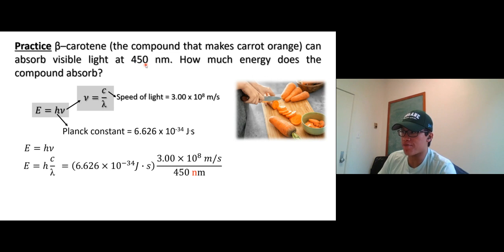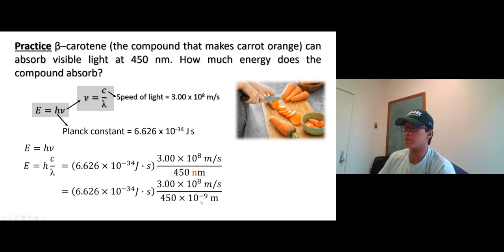The wavelength is given as 450 nanometers. Watch out for the unit—you have to convert to meters. Nano is 10⁻⁹, so it's 450 × 10⁻⁹ meters.